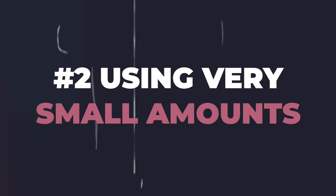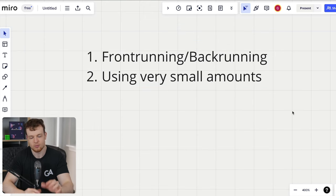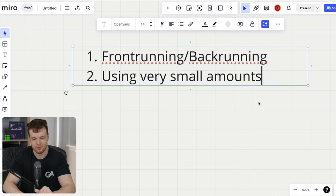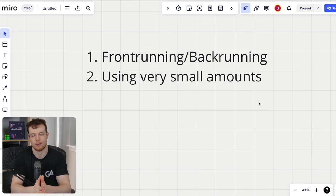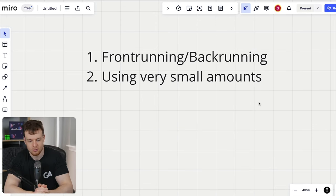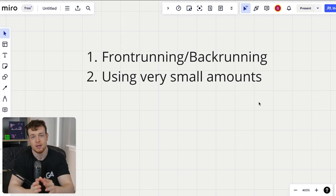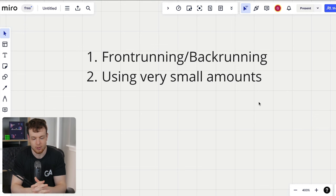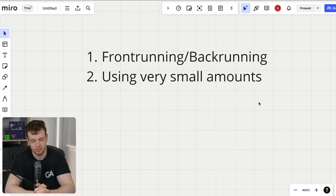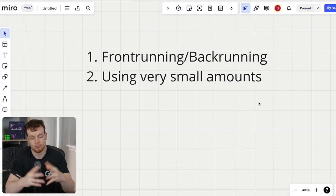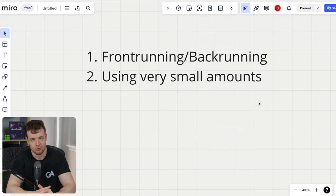Number two is using very small amounts. This will often feed into rounding or precision loss issues — if you provide a single wei, it's possible it will get rounded down to zero if you're using division. I always love to test this out and see if I can get the protocol into an invalid state by using something like one wei. This is also something that will be covered by fuzzing if you write out invariants and implement a stateful fuzzing suite.